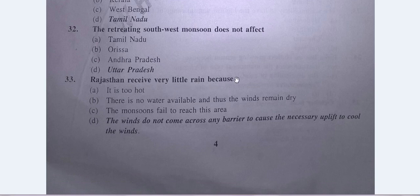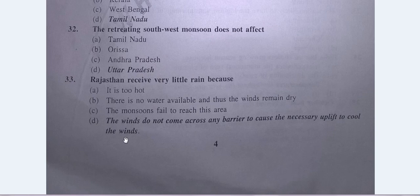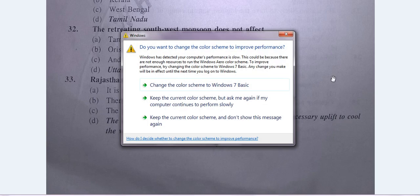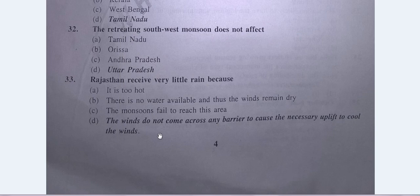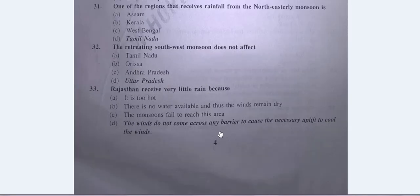Question No. 33: Rajasthan receives very little rain because the winds do not come across any barrier to cause the necessary uplift to cool the winds. The answer is D — the winds do not come across any barrier to cause the necessary uplift to cool the winds.